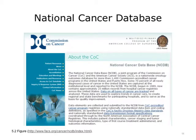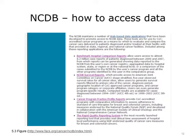Here we can see the homepage for an epidemiological database containing information on nationwide cancer data — the National Cancer Database. This website provides an explanation for the purpose of the National Cancer Database, as well as information on what kind of data is collected. We can also see on the left-hand side of the homepage additional links to other sections of the website. We need to determine if there is a way for us to access the data, as figuring out what information is accessible can sometimes be confusing.